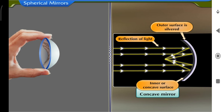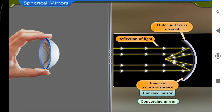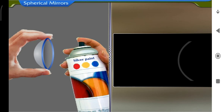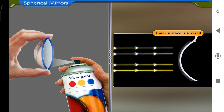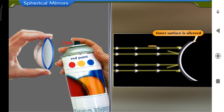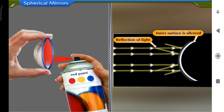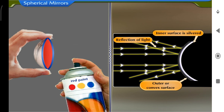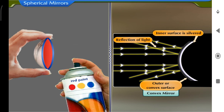A concave mirror is also called a converging mirror. On the other hand, a mirror in which the inner surface is silvered so that the reflection of light takes place from the outer or convex surface is called a convex mirror. A convex mirror is also called a diverging mirror.